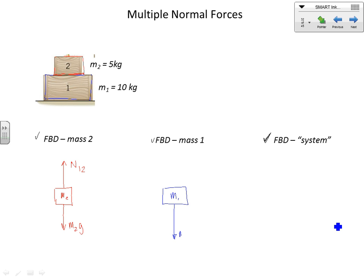For m1 we have m1g and a normal force. Remember, it's useful to describe forces as 'this is a force that the blank exerts on the blank.' So this gravitational force is the force that the earth exerts on m1, and this is a normal force that the earth exerts on m1. Now notice: we have a normal force that mass one exerts on mass two, so we must also have a normal force that mass two exerts on mass one — and this is what we call a force pair.